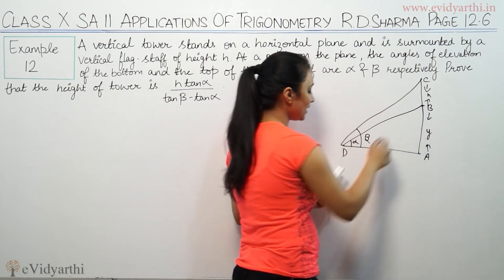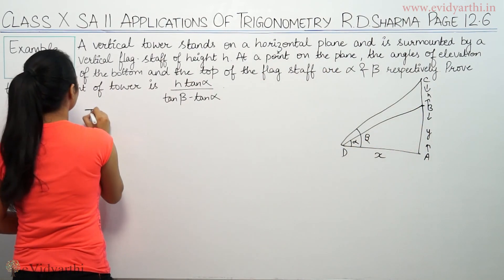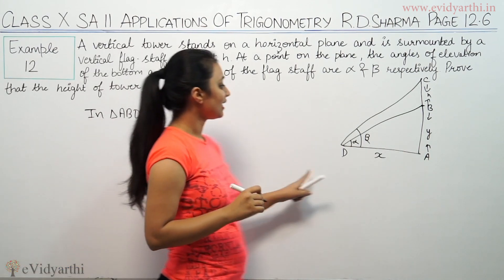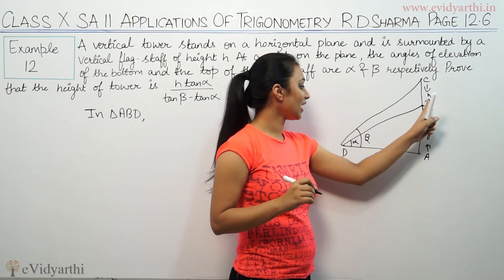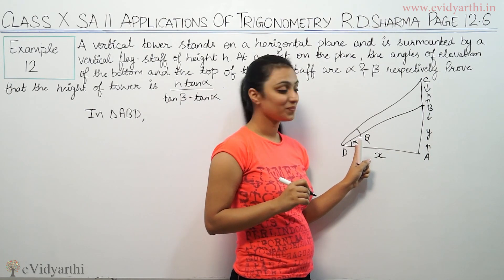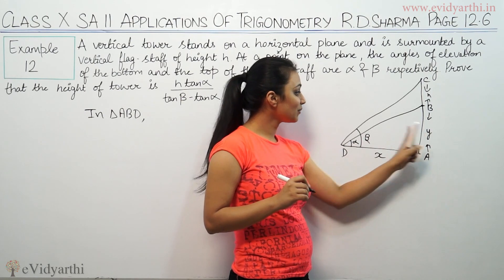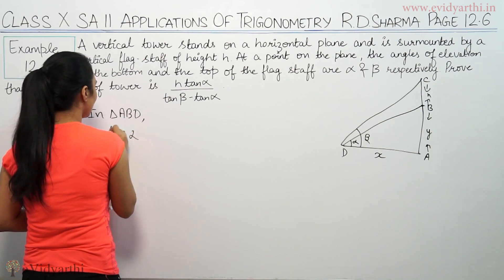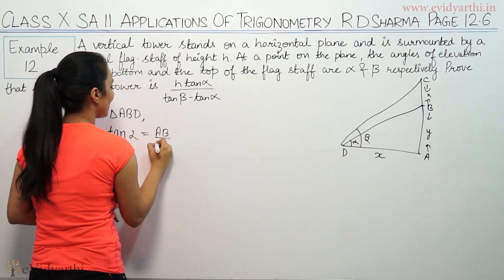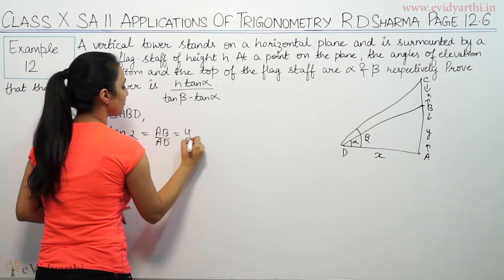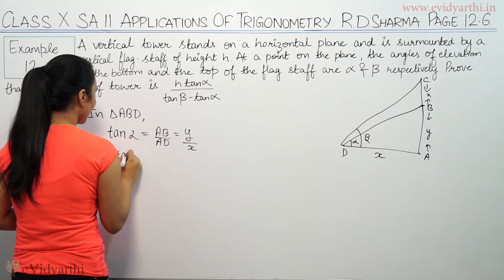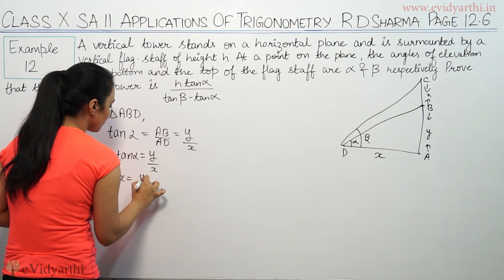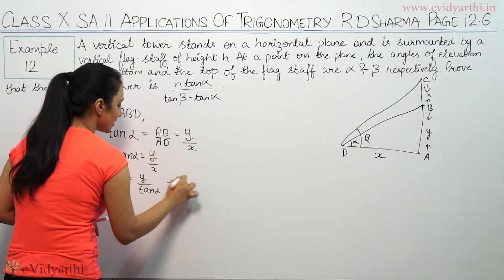This is a right-angle triangle. In triangle ABD, we use x and y. This angle is alpha, and tan alpha equals perpendicular upon base, which means AB upon AD, that means y by x. So tan alpha = y/x, which gives us x = y / tan alpha. This is the first equation.